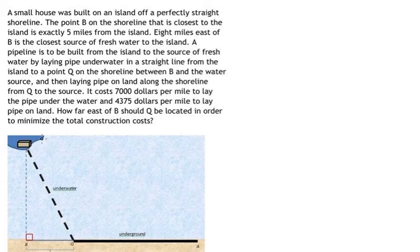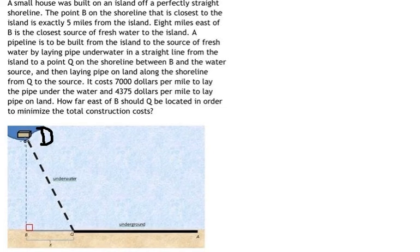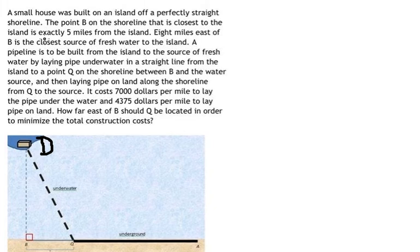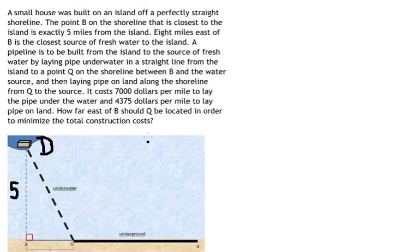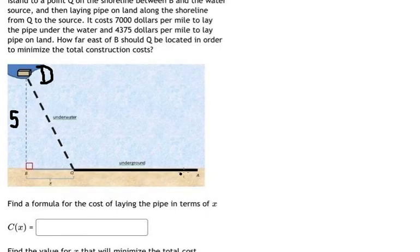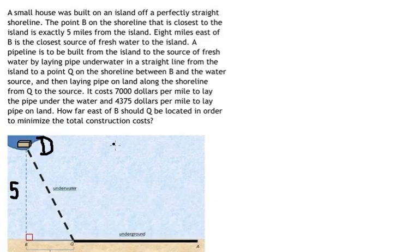Now I will show you how to answer. First, I will set up this location. From D to B, we know that is exactly five miles, so we put the number five here. The next one: eight miles east of B is the closest source of fresh water to the island. So from B to A, we have the number eight.